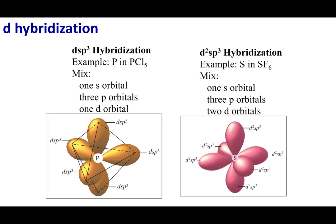Reviewing from the last lecture, we hybridize to accommodate the angles that VSEPR predicts. Continuing with VSEPR structures, for steric number five we have 90-degree, 120-degree, and 180-degree angles, which requires DSP3 hybridization. For steric number six, which requires 90-degree and 180-degree angles, the hybridization you want to use is D²SP3.